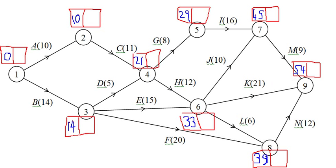Now that's the early times. Now we're going to go through the same thing again, this time backwards, to find the latest possible times that we can be at each node in order to finish the project at fifty-four. So if we want to finish at fifty-four, the latest that we can finish is fifty-four. Moving backwards: if M takes nine, we must be at seven by forty-five, ready to do M, to finish the project at fifty-four.